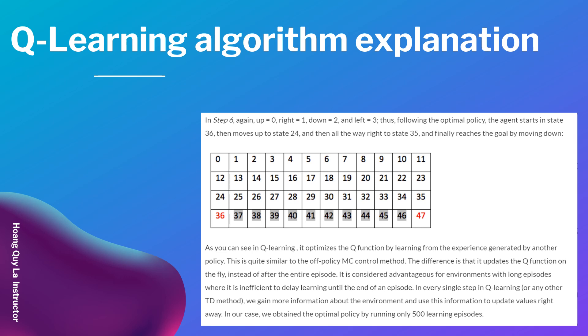This is quite similar to the off-policy Monte Carlo control method. The difference is that it updates the Q function on the fly instead of after the entire episode. It is considered advantageous for environments with long episodes where it is inefficient to delay learning until the end of an episode.